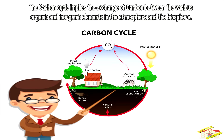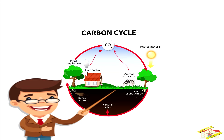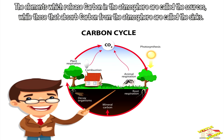Now let's go over the carbon cycle. The carbon cycle describes the exchange of carbon between various organic and inorganic elements in the atmosphere and the biosphere. The elements which release carbon into the atmosphere are called the sources, while those that absorb carbon from the atmosphere are called the sinks.